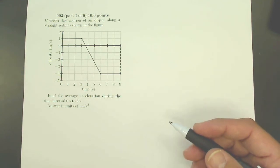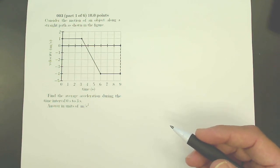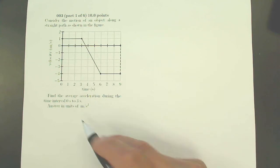Consider the motion of an object along a straight path as shown in the figure. Find the average acceleration during the time interval 0 to 3 seconds, answering in units of meters per second squared.